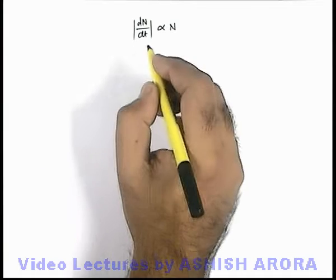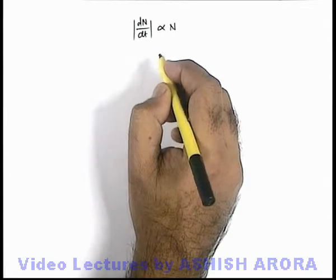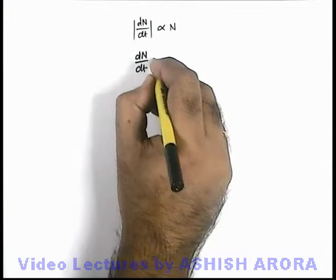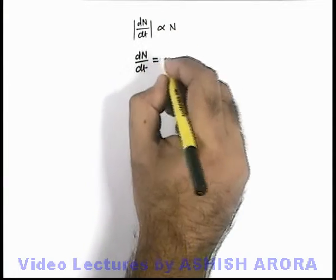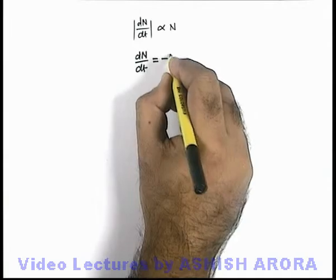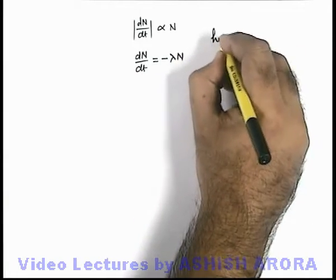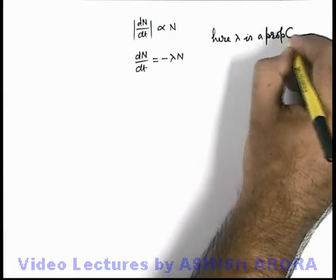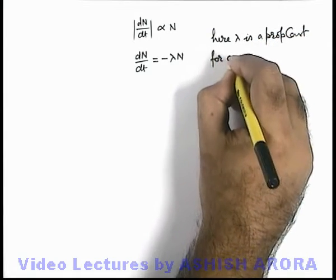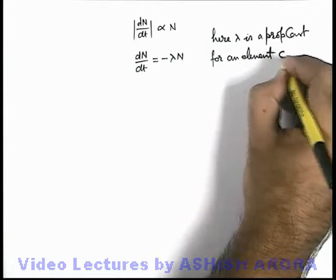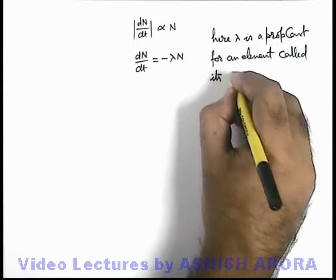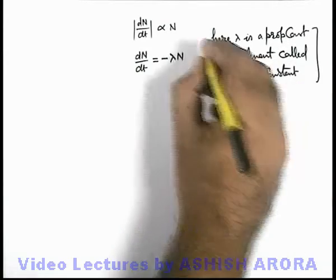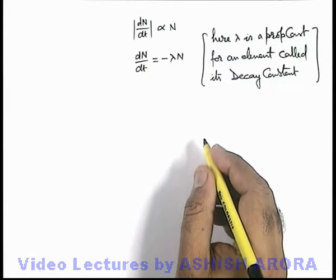As we've seen, according to decay law, the activity at any instant is proportional to number of undecayed nuclei. So here, this dN by dt we can further write as, which includes a proportionality constant with a negative sign as we've removed the modulus sign, so it'll be minus λN. And here we can write, λ is a proportionality constant for an element called its decay constant.